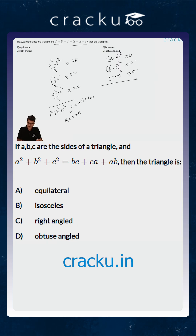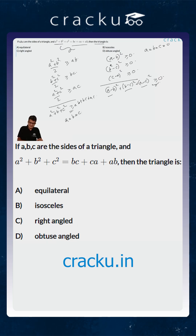If you add all of them up, (a - b)² + (b - c)² + (c - a)² is greater than or equal to 0. The equality will hold if all three of them are equal to 0, that is, a = b = c.